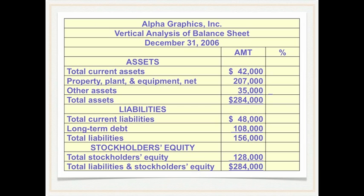Total current assets are $42,000. To express that as a percent of total assets we would take 42,000 divided by 284,000, and we find that total current assets are 14.8 percent of total assets.